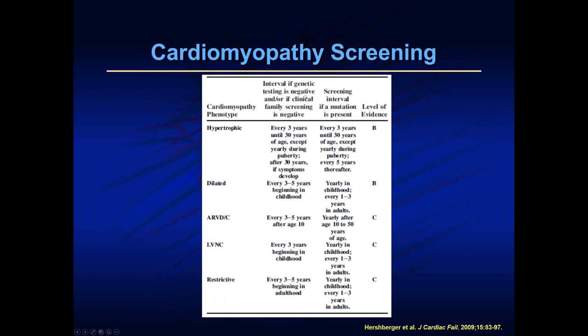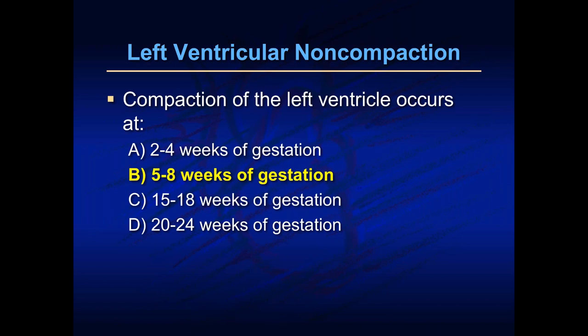We also use biventricular pacing or cardiac resynchronization therapy in patients with ejection fraction less than 35% who have dyssynchronous squeeze — usually evidenced by left bundle branch block. Follow-up frequency: if genetic testing and clinical testing are negative, every one to two years in our center, at minimum every three years. If there's a causative screening mutation, we see patients yearly in childhood and every one to three years in adulthood.